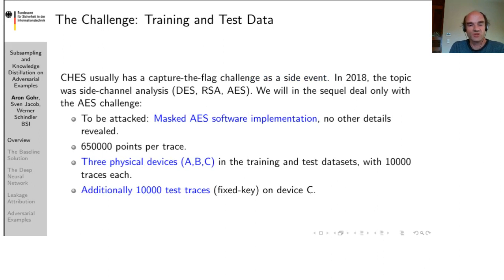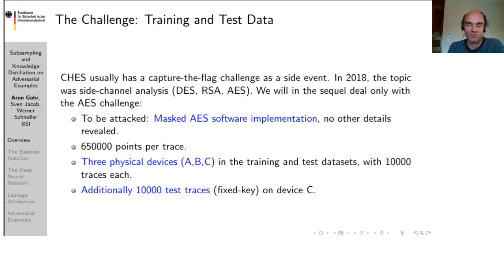The CHESS conference usually has a capture-the-flag challenge as a side event. In 2018 this was a side channel analysis challenge featuring DES, RSA and AES implementations. The IIS challenge was a masked IIS software implementation with no details on the masking scheme being revealed. The traces were captured at fairly high resolution at 650,000 points per trace. There were three physical devices A, B and C represented in the training and test data sets, each with 10,000 traces — a total of 30,000 training traces and 10,000 test traces with a fixed key, all captured on device C.